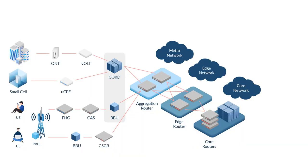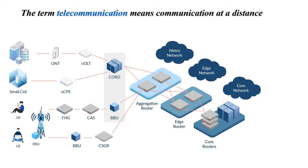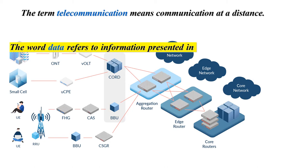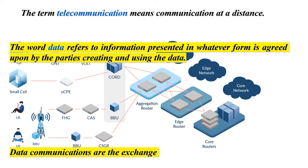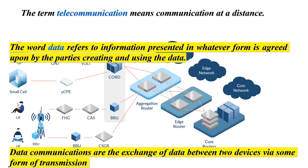What is data communication? The term telecommunication means communication at a distance. The word data refers to information presented in whatever form is agreed upon by the parties creating and using the data. Data communication is the exchange of data between two devices via some form of transmission medium such as a wire cable.